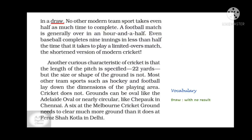Another curious characteristic of cricket is that the length of the pitch is specified as 22 yards, but the size or shape of the ground is not. Most other team sports such as hockey and football lay down the dimensions — length and breadth — of the playing area, but cricket does not. The ground can be oval, like the Adelaide Oval, or nearly circular, like the Chepauk in Chennai. A six at the Melbourne Cricket Ground needs to clear much more ground than it does at the Feroze Shah Kotla in Delhi.